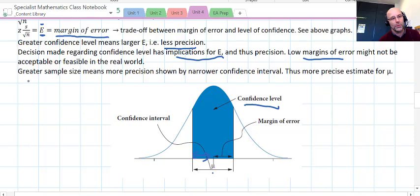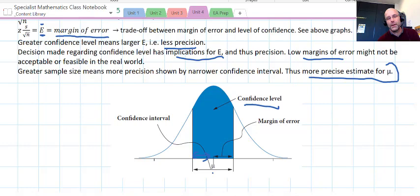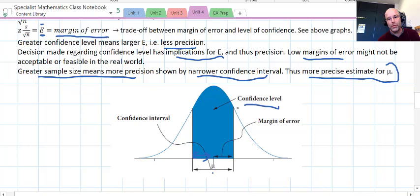We have to consider the applications of it, and we do that through the questions we do. Greater sample sizes means more precision because you have a narrower confidence interval, and that means you have a more precise estimate for mu, the population parameter, the mean of the population. Increasing sample size means more precision, and that's shown through a narrower confidence interval.